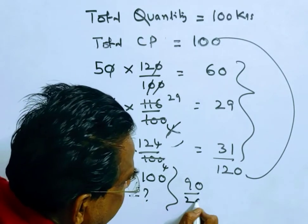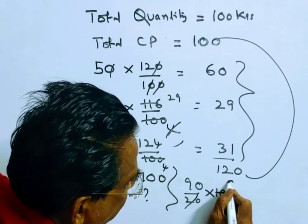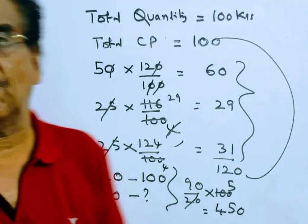90 over 20 into 100. Friends, 90 divided by 20 is 4.5, times 100 equals 450. 450 is your answer. Friends, 450 is your answer.